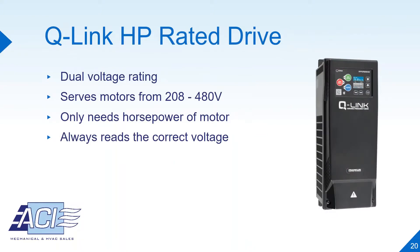The number one reason for VFD returns was that the voltage type was ordered incorrectly. Franklin Control Systems responded to this by developing the Q-Link horsepower rated drive, which has dual voltage rating, ensuring that it will always read the correct voltage. This model is good when the customer does not know the voltage needed since it serves motors from 208 to 480 volts, and the only information you need is the horsepower of the motor. For example, the same VFD will work at 5 horsepower, 480 volts, and 5 horsepower, 208 volts. Thus, it eliminates the possibility of incorrect voltage.